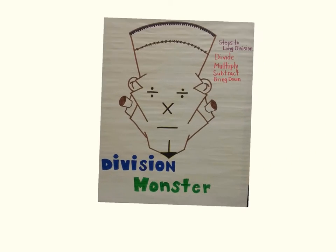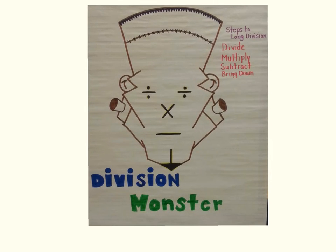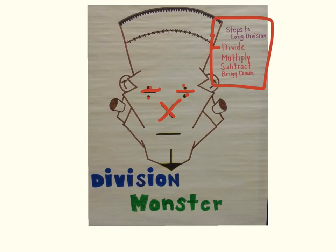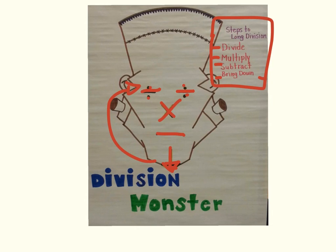When doing long division, remember the division monster and his steps. His steps are in his face: dividing eyes for the first step, a multiplication nose for the second step, a subtraction mouth for the third step, and a bring-down goatee for the fourth step. After that, always go back to the top and start again. Keeping the division monster in mind, you should remember the steps for long division. Good luck and have fun.